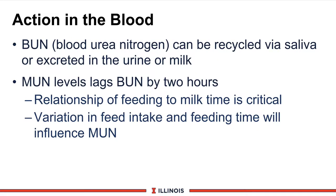Now moving into the bloodstream: we have BUN, or blood urea nitrogen, formed by the liver. Several things can happen to it. It can be recycled in saliva — good news, because it has another chance to be incorporated into microbial protein — or it can be excreted in urine, or milk levels can increase because milk is made from blood. The MUN value will usually lag behind the BUN value by about two hours.